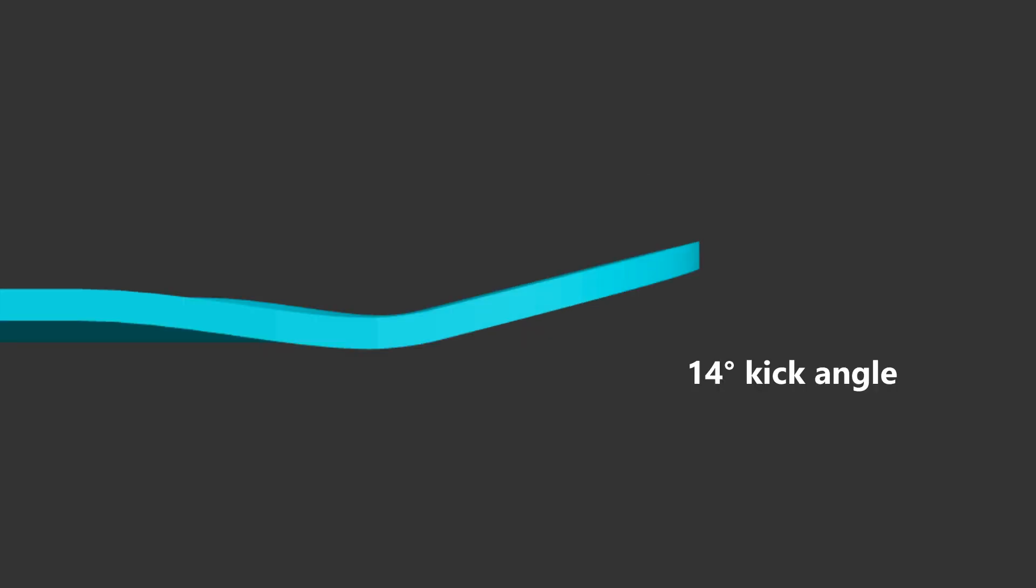A steeper angle means the board's kick is closer to being vertical. A smaller radius means the kick bends to that angle more tightly. For example, a really small radius would feel like the board is simply kinked or sharply bent.